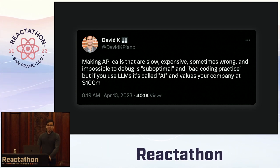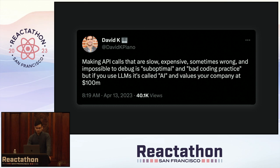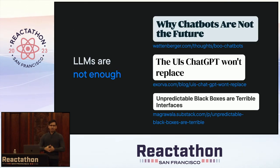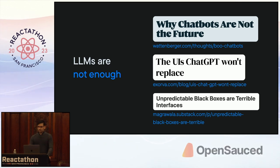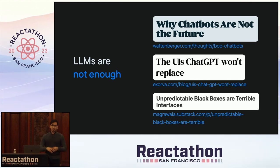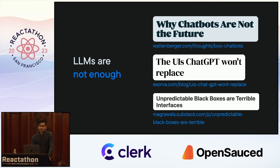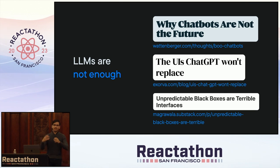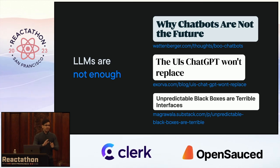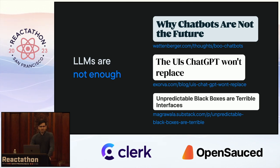Despite all of this, I would say that LLMs are not enough. There are three recent articles that came out within the last week: one says chatbots are not the future, which I agree with. There's also 'The UIs ChatGPT Won't Replace,' which argues that user interfaces are still really useful — we're not going to try to transform everything to a chatbot. And also, unpredictable black boxes are terrible interfaces, just because we cannot predict how applications are going to work. If a user does something and we don't get the expected output, we're like — do I have to tweak the prompts? Do I have to say the right magical words to make it work? It just doesn't become that good of a user experience.